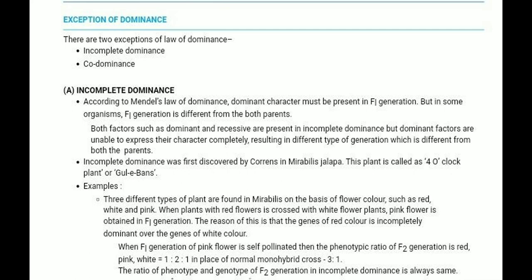When the F1 generation of pink flowers is self-pollinated, the phenotype ratio of the F2 generation is red : pink : white = 1 : 2 : 1. So in place of the normal monohybrid cross ratio of 3:1, we get 1:2:1. In incomplete dominance, the phenotype ratio and genotype ratio of the F2 generation are always the same — 1:2:1.